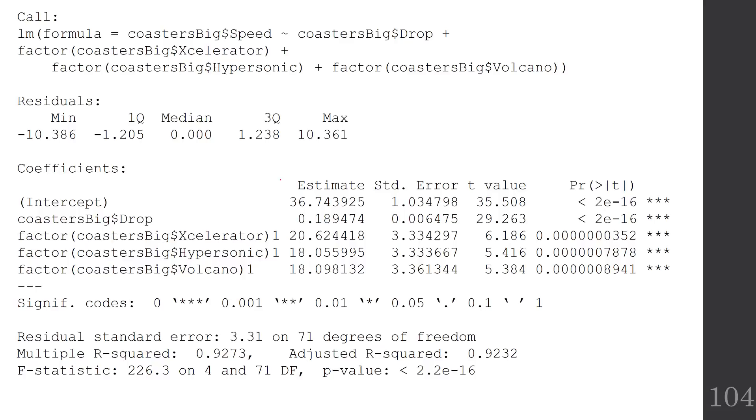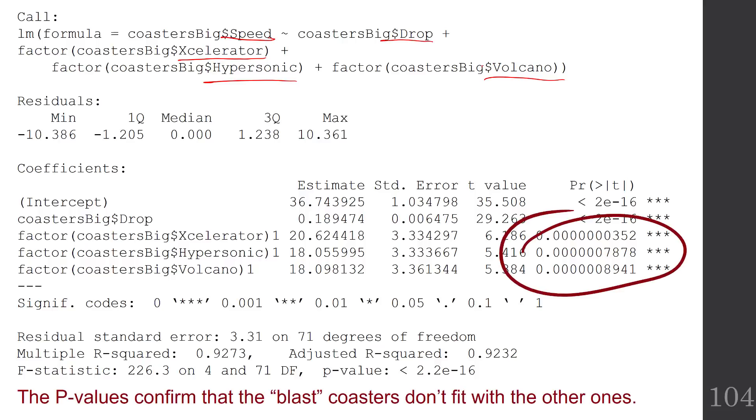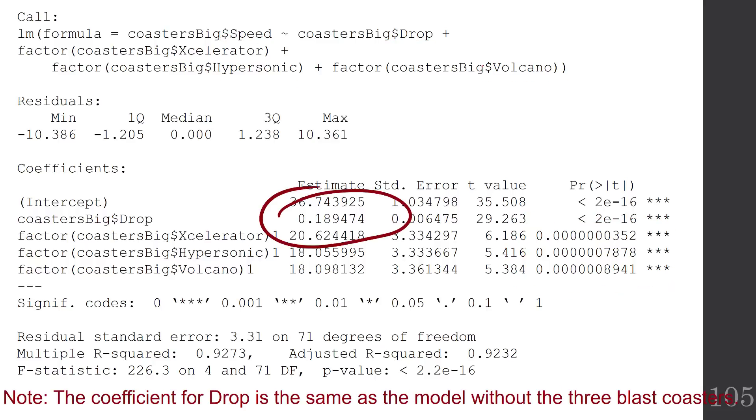When I run the regression again with speed on drop and my three individual accelerated roller coasters, I can see that my p-values for each of the individual roller coasters is tiny. The p-values confirm that these are significant, that the blast coasters don't fit with the other coasters. All by themselves, they're significant. Also notice that the coefficient for drop is the same as the model without the three blast coasters - it's about 0.18 and 0.19.